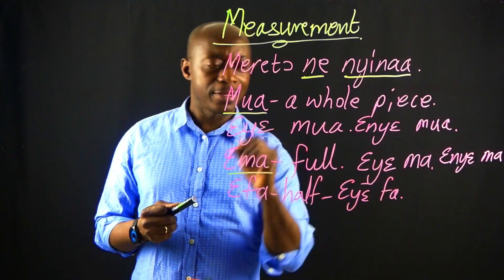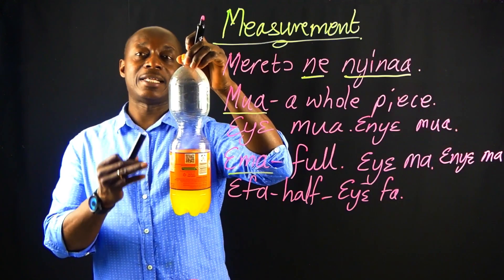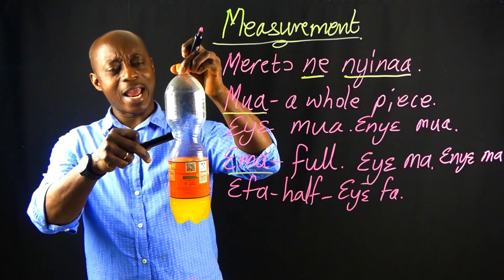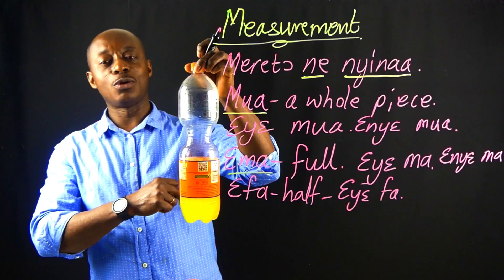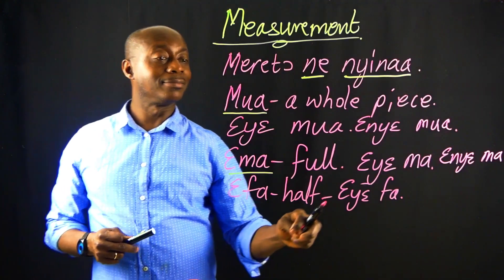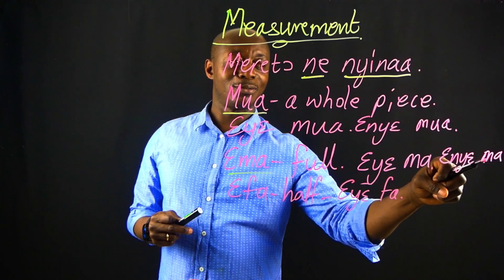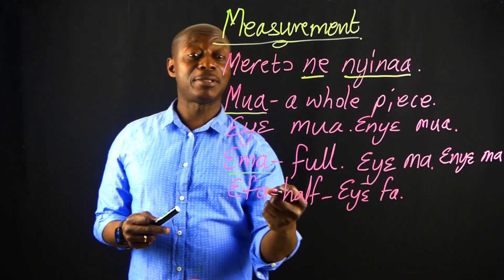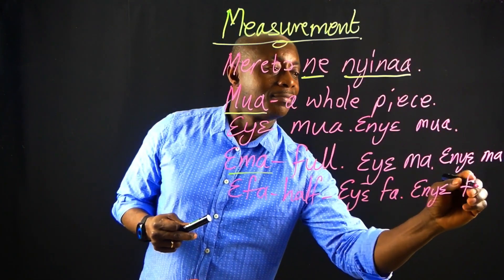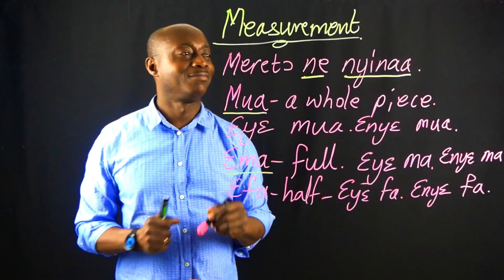So here we say EYE FAN — it is half. But what if you want to say it is NOT half? If you show something and say 'it is not half,' you say EYE FAN. It is not half.